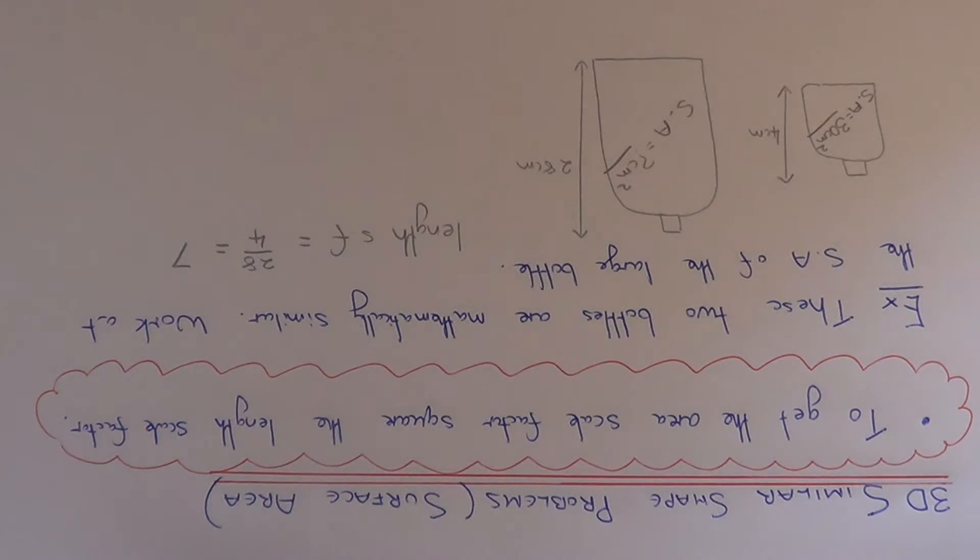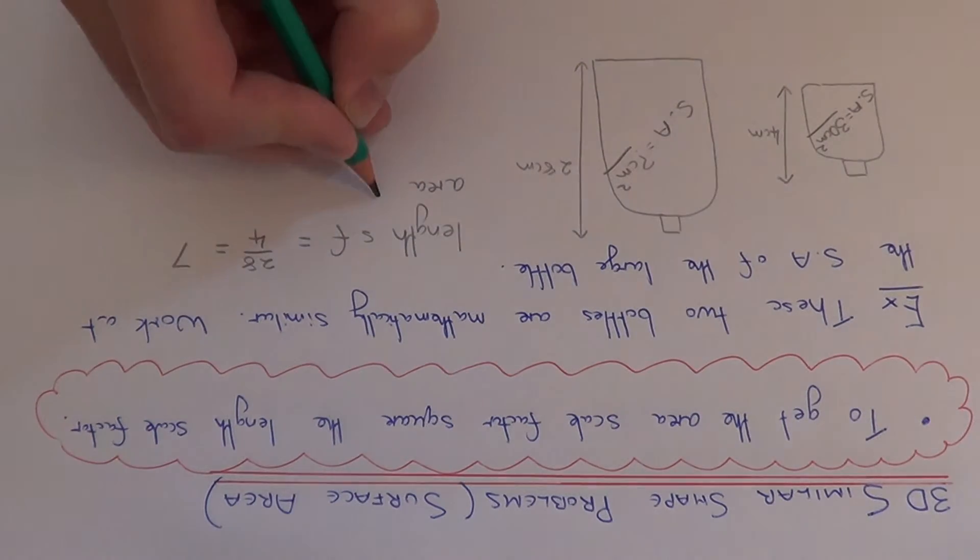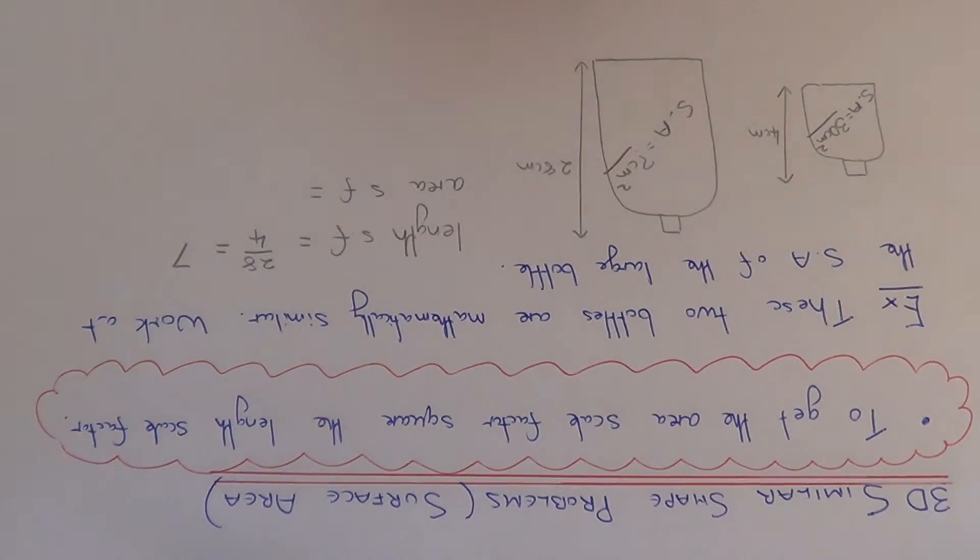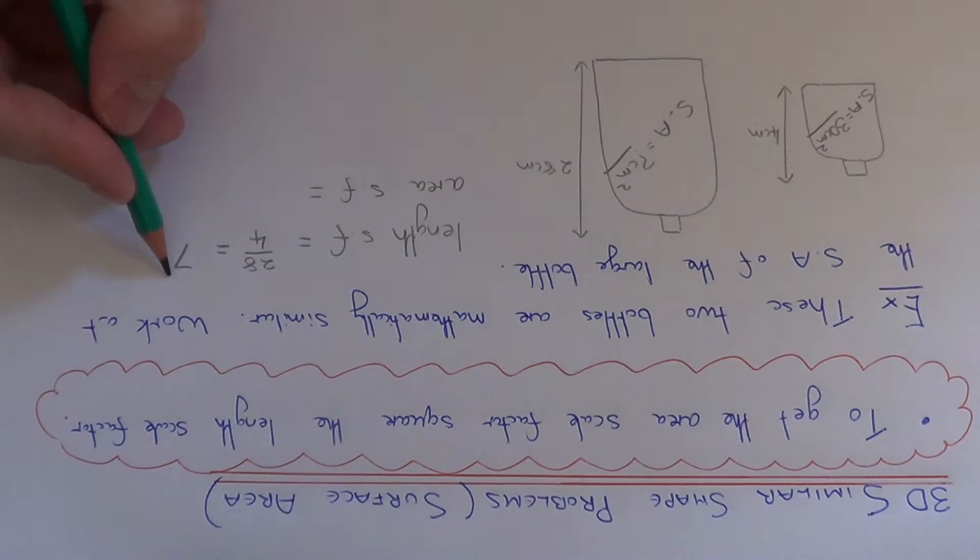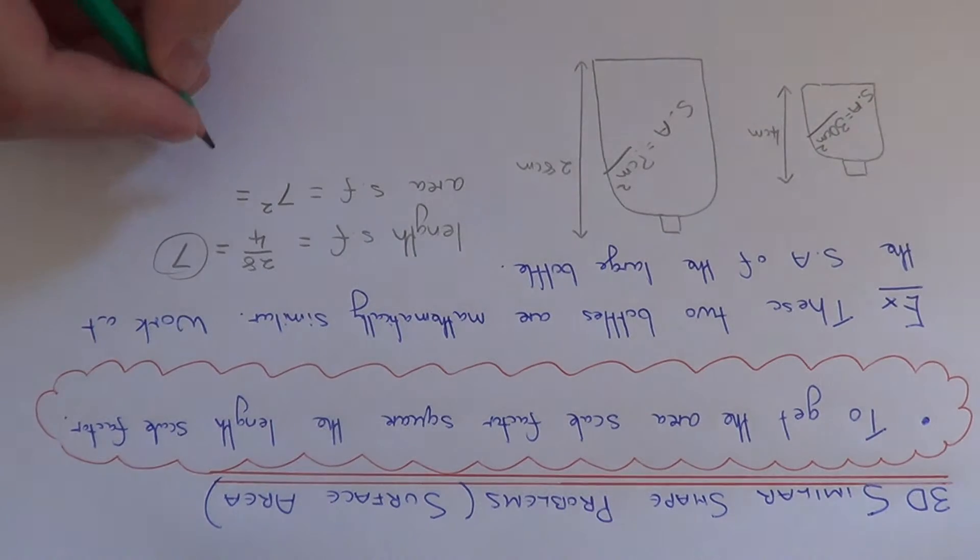However this does not mean that the surface area is 7 times as big. So what we need to do next is work out the area scale factor. To get the area scale factor we have to square the length scale factor. So 7 squared is 49.